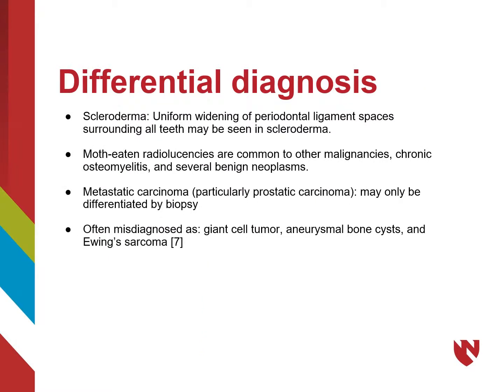As far as a differential diagnosis, one of them is scleroderma. Moth-eaten radiolucencies are common to other malignancies, chronic osteomyelitis, and several benign neoplasms. Metastatic carcinoma, particularly prostatic, may only be differentiated by biopsy. Osteosarcoma is often misdiagnosed as a giant cell tumor, aneurysmal bone cysts, and Ewing sarcoma.